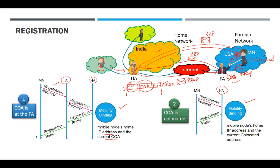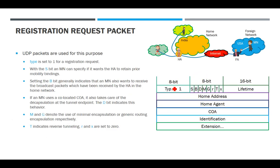So those are the two ways registration is done. Now let us discuss what the message packets look like — what fields are present in the registration request and registration reply packets. This is the registration request packet, which is a 32-bit structure. The type field is set to 1 for a registration request. Remember, these are UDP packets used for registration.